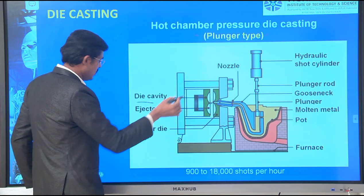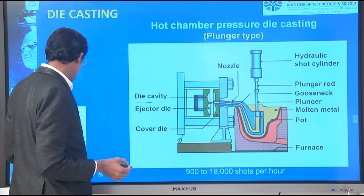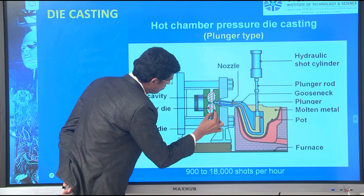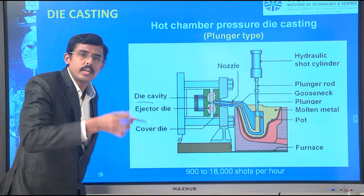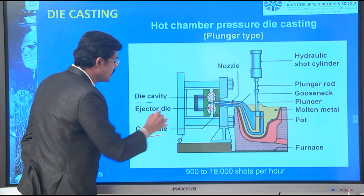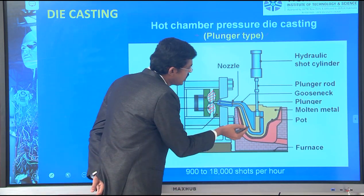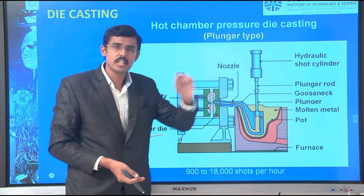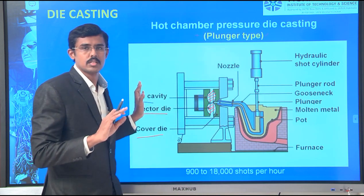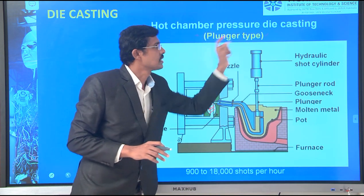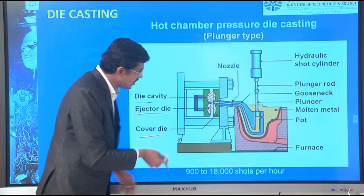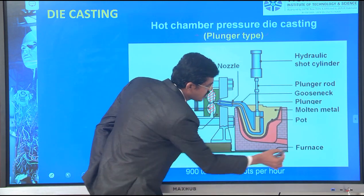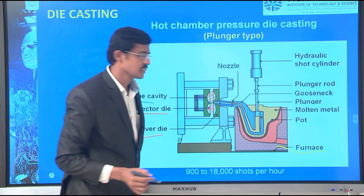The second type of hot chamber die casting is the plunger type. Instead of using air pressure, a pressurizing plunger is used, operated through hydraulic cylinders. This avoids air interaction, eliminating the oxidation problem. In the die cavity, one die is movable and one is fixed. The gooseneck channel is present here too, but now operated by the plunger type instead of air injection.